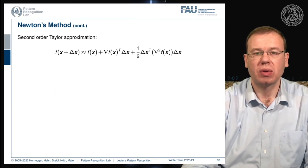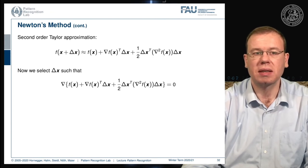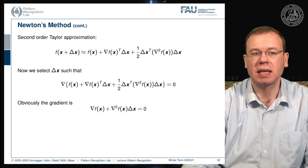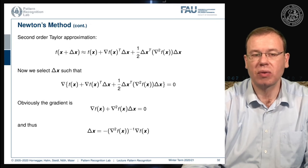To find the optimal update direction, we compute the gradient of this approximation with respect to Δx. The terms not involving Δx cancel, leaving ∇f(x) + H Δx = 0. Solving for Δx gives the Newton step: Δx = −H⁻¹ ∇f(x), i.e., the inverse of the Hessian matrix times the negative gradient.